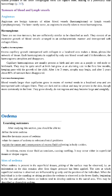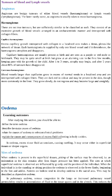Always remember: when a word ends with '-oma,' like angioma or hemangioma, it means it is a benign tumor. If it ends with '-sarcoma' or '-carcinoma,' such as basal cell carcinoma, that indicates it is a malignant tumor, not a benign one. Always keep this distinction in mind.